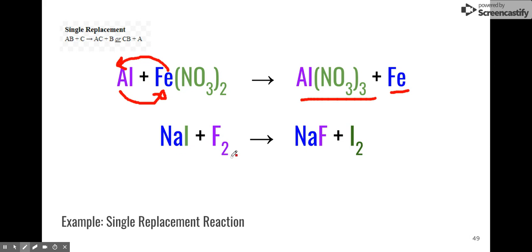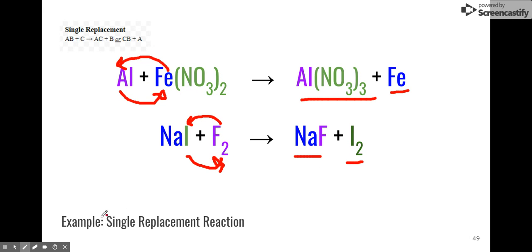Same thing with sodium iodide and fluorine gas. Fluorine is going to come and replace the iodine because fluorine has a different charge. It replaces the second element, and iodine comes out and becomes a wallflower. There are our new partnerships — that's a single replacement reaction.